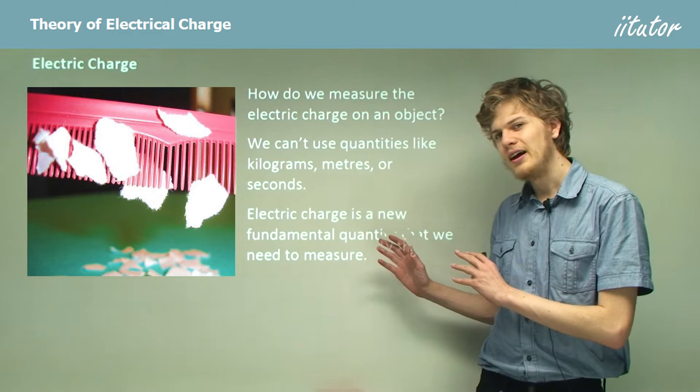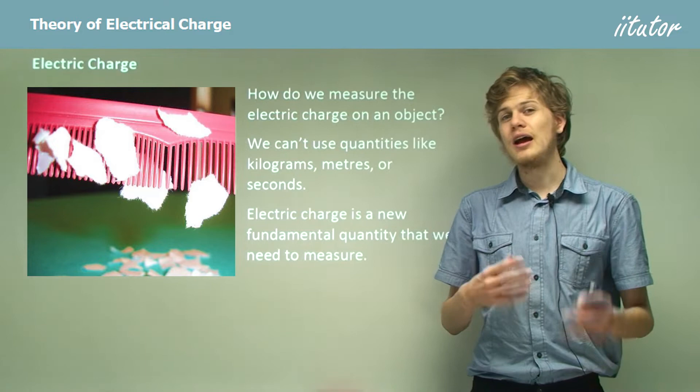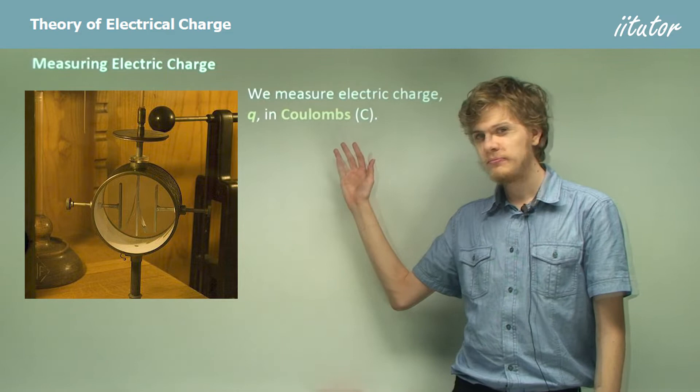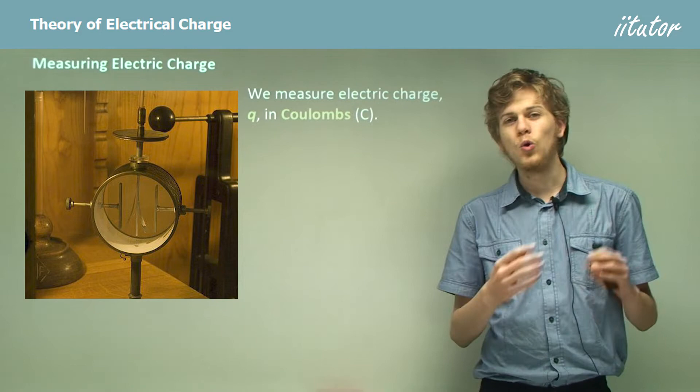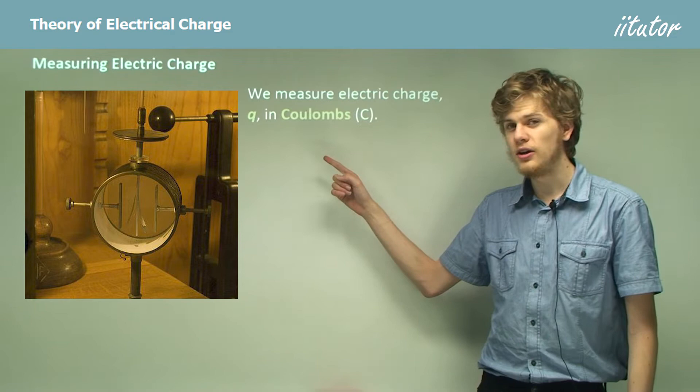So we're going to need a new unit to measure this fundamental quantity of electric charge, something that we haven't used before. What we will measure it in is coulombs. Algebraically, we represent electric charge by a lowercase q. So in the same way that we use L for length and we measure it in meters, or T for time and measure it in seconds, we're going to use q for charge and measure it in coulombs.